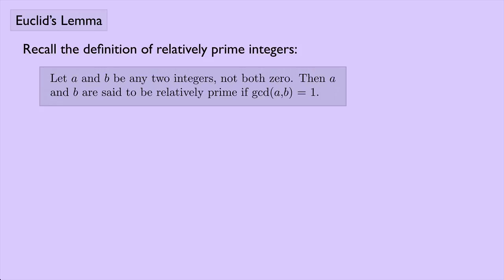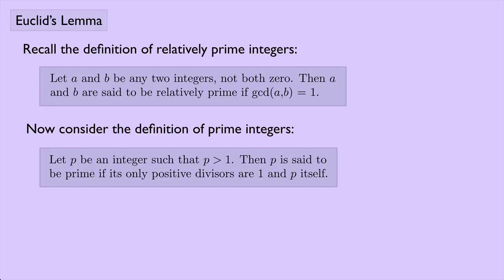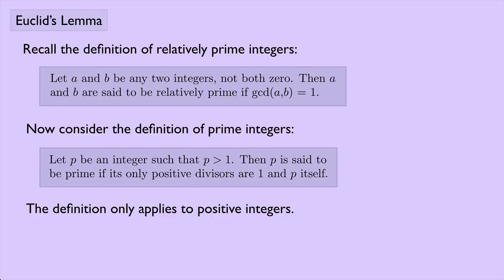What about just one integer? What about a prime integer? Let's look at the definition of prime integers. Let p be an integer such that p is greater than one. Then p is said to be prime if its only positive divisors are one and p itself. A few things to note: the definition only applies to positive integers, since p is greater than one. In particular, one is not prime.